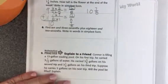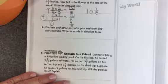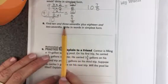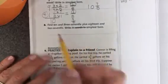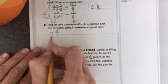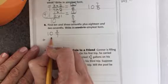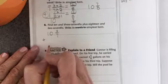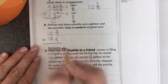All right, when you get to number 8, it says find 10 and 3 sevenths plus 18 and 2 sevenths. Write in words in simplest form. You can write it in words if you want to, but you don't need to if you don't want to. All right, 10 and 3 sevenths plus 18 and 2 sevenths. Okay, and you'll add that up.